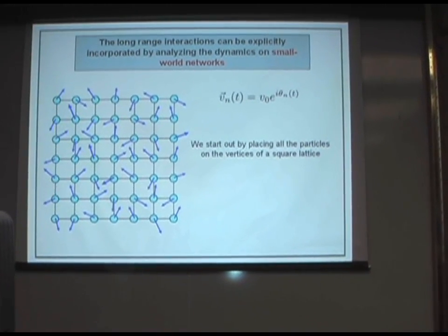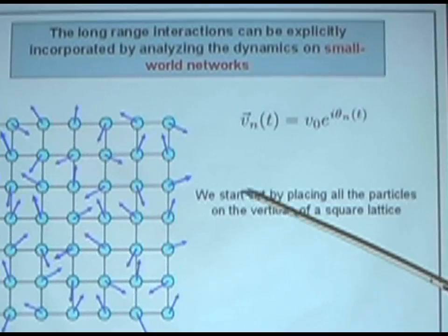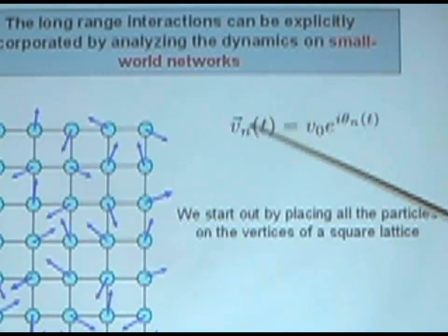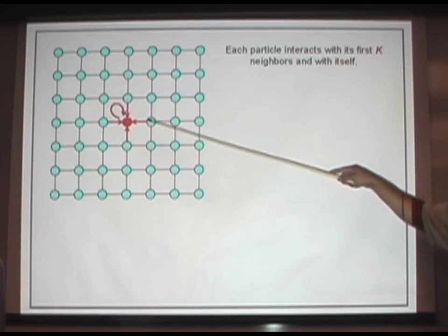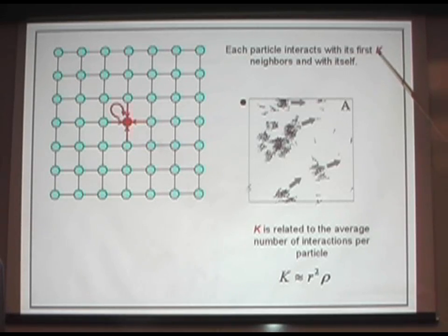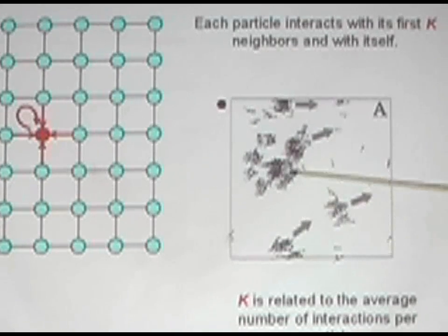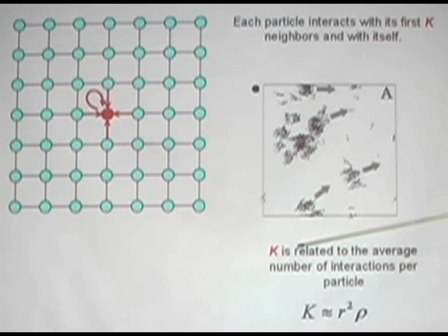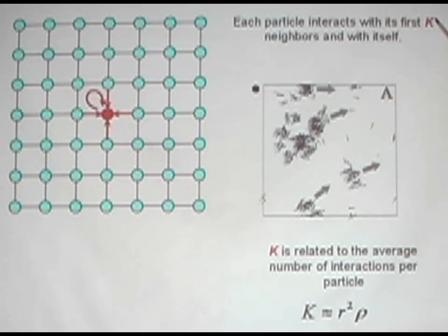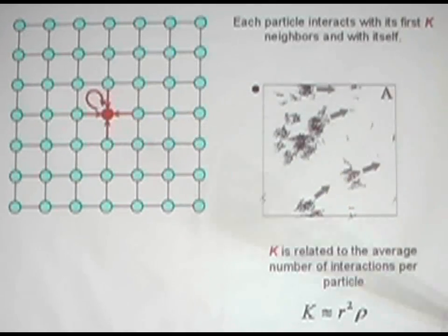What we do here is place all the particles on the lattice. The particles don't move anymore — they are fixed on the nodes of the lattice, so these vectors are not velocities, they are just vectors. The particles interact with the first k neighbors and with themselves. The number of interactions per particle should be a function of the density and the radius of the interaction vicinity. This k is the average number of interactions per particle, so we can compute from the simulations of each model how many interactions per particle there are and implement a network topology with this average k.